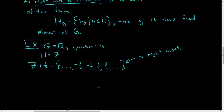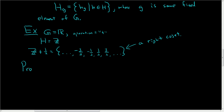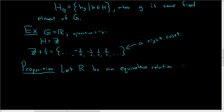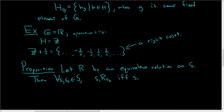There's one more result we need to go further. Proposition: let R be an equivalence relation on S. Then for all s1, s2 in S, s1 is related to s2 if and only if the equivalence class of s1 equals the equivalence class of s2. Let's give a quick proof of this.